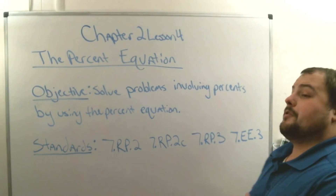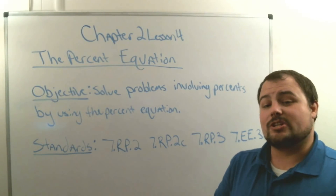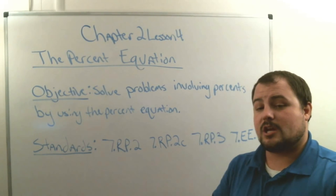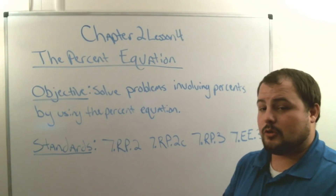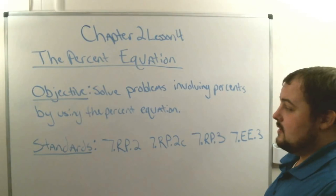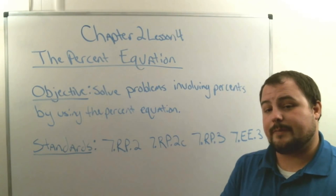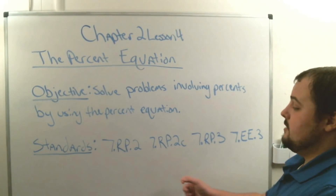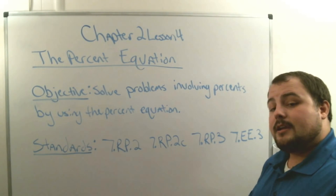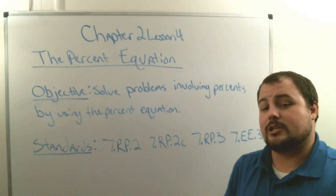Hey seventh graders, welcome to your fourth lesson for chapter two. Today we're going to be talking about the percent equation. You just learned how to do the percent proportion — part over whole equals percent over 100. Now we're going to learn another equation to figure out different missing pieces. Our objective is to solve problems involving percents using the percent equation. Standards addressed are seventh grade ratios and proportions 2.2c.3 and equivalent expressions standard three.